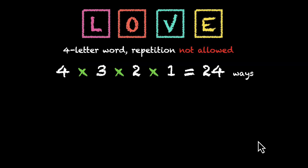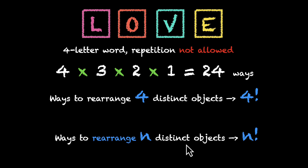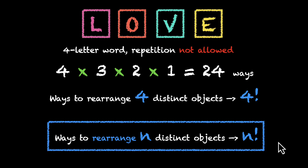One final note: sometimes you'll see formulas in your textbooks. I want you to get better at figuring things out on your own rather than relying on formulas, but since they appear everywhere, here's one. For LOVE — making four-letter words with no repetition — the number of ways is 4 × 3 × 2 × 1 = 4!. So the number of ways to rearrange n distinct objects is n factorial. Some call this permutation.